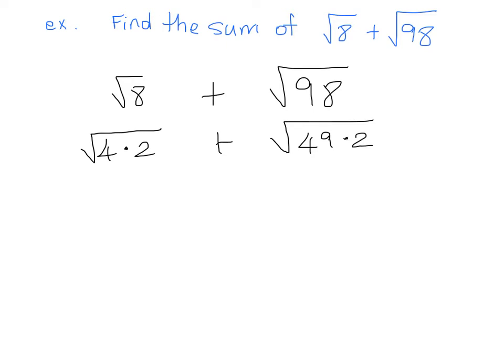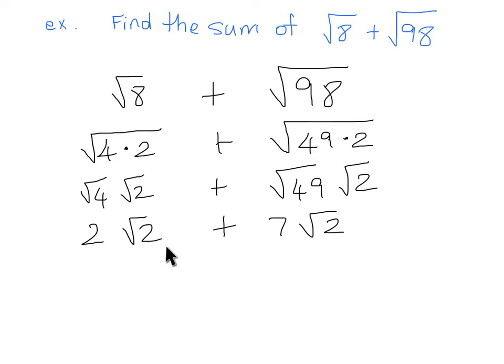So this is really root 4, root 2, according to our properties of radicals, we are totally allowed to do that, plus root 49, root 2. Which gives us 2 root 2 plus 7 root 2. Now we can ask ourselves, are these like radicals? Well, we have square root, so our index is square root, and our radicand is 2 in both cases. These are actually like radicals. So we can go ahead and add these up, and we get 2 root 2 plus 7 root 2, which equals 9 root 2.